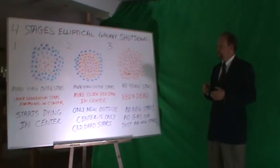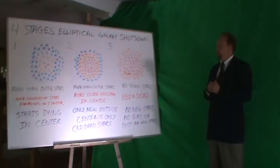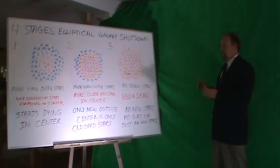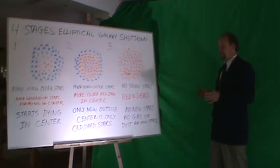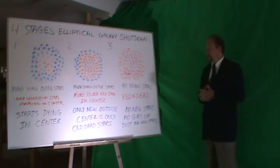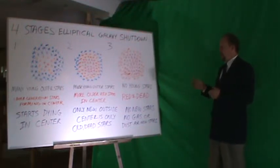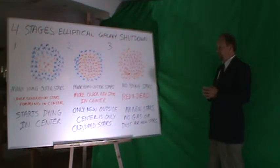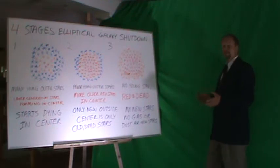In stage one, we have many young outer stars and later generations of stars forming in the center, and this galaxy starts dying in the center. In stage two, we see fewer young outer stars and more older red stars in the center. The only new stars are outside, and the center is only filled with old, dead stars.